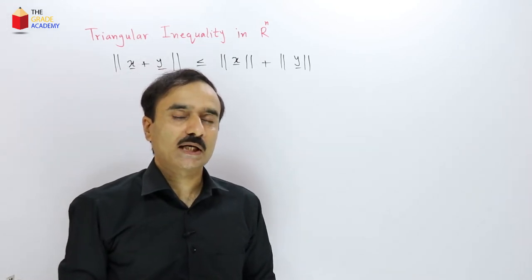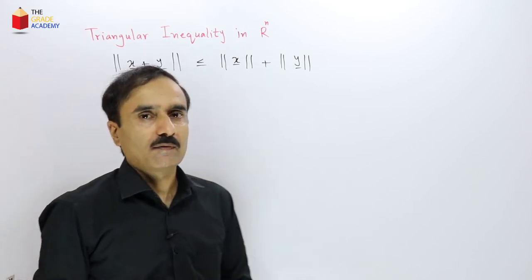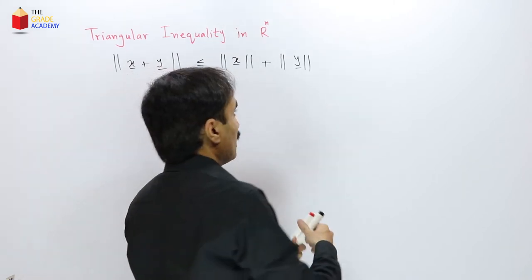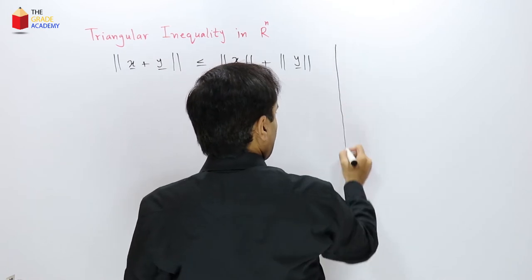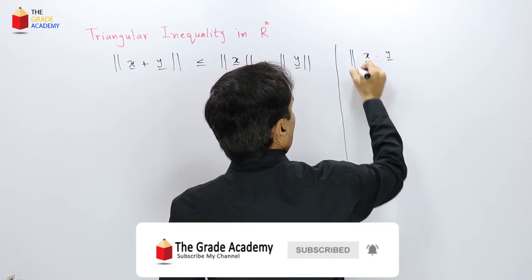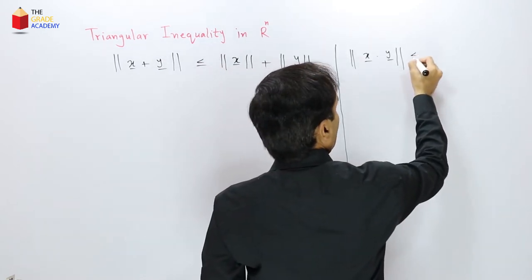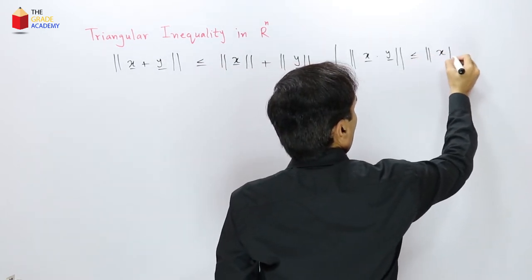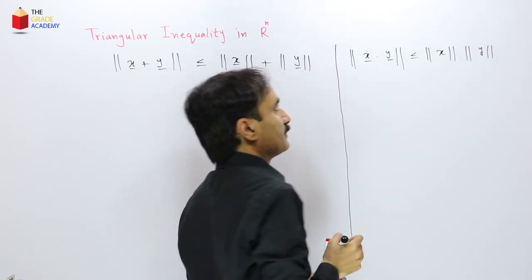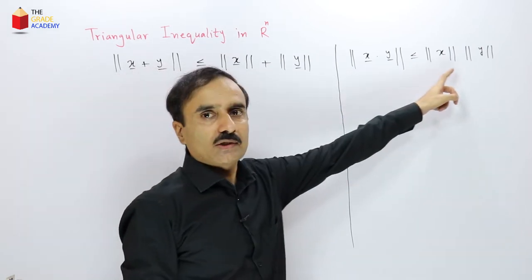Now let's prove this inequality. To prove it, we will use the Cauchy-Schwarz inequality that we proved last time. The Cauchy-Schwarz inequality says that the absolute value of the dot product or inner product is less than or equal to the norm of the first vector times the norm of the second vector.